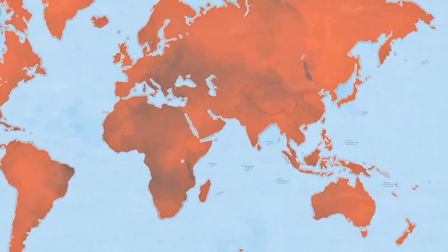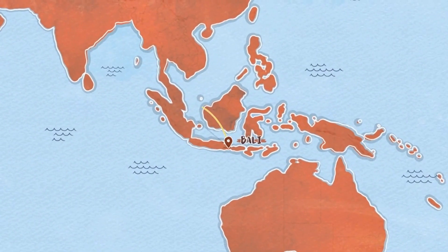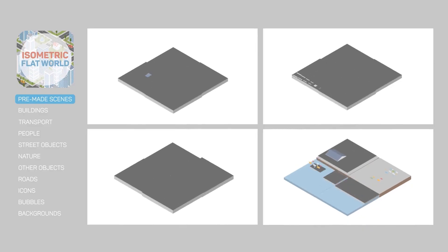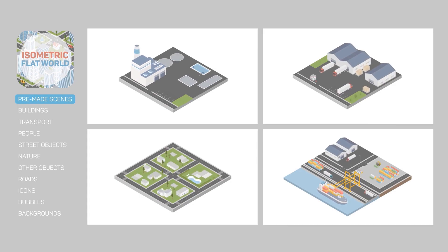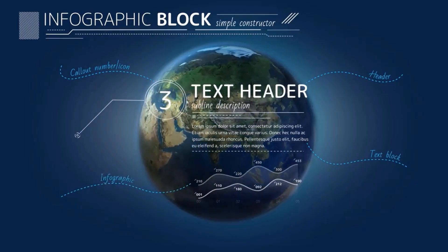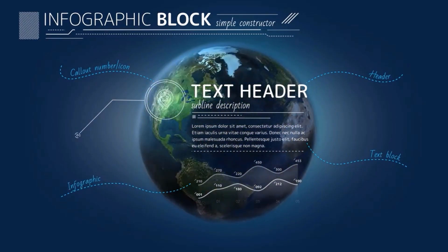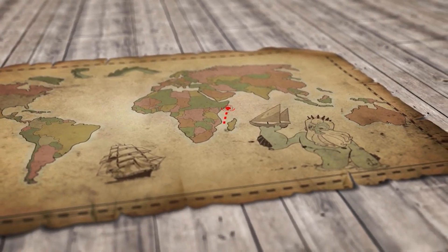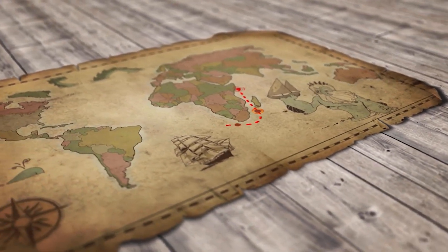Alright, there you have it — those are some cool map tools to use inside of Adobe After Effects. Once again, if you want to check out some free options, I'm going to link to the video I created last year. And if you want to check out any of these products further, please use my affiliate links down in the video description — that really helps support my channel. Thanks again and I'll see you in the next one.